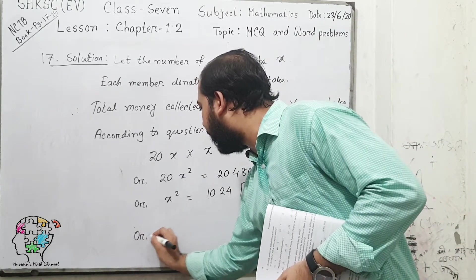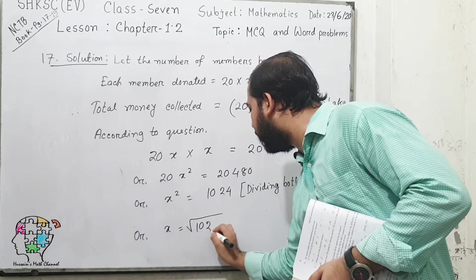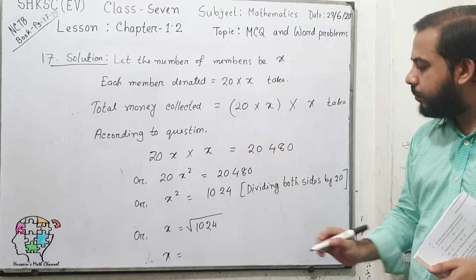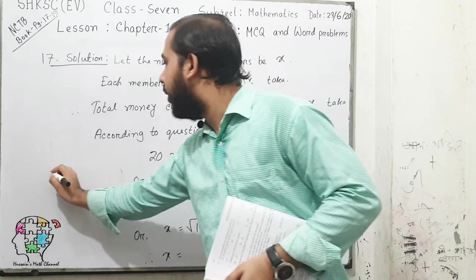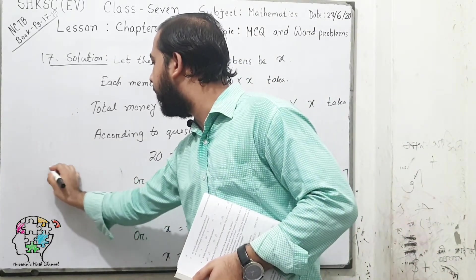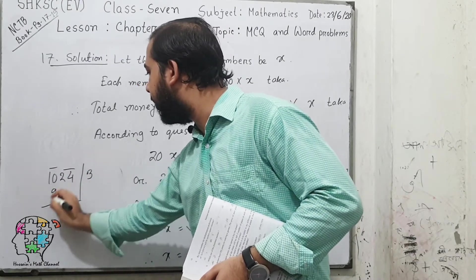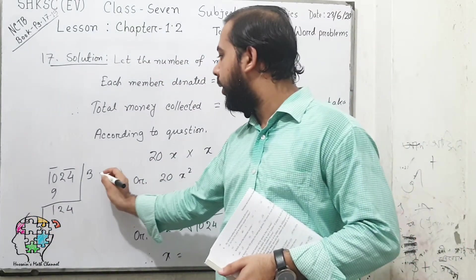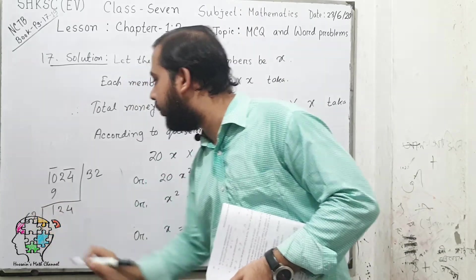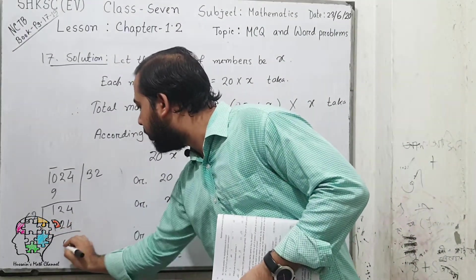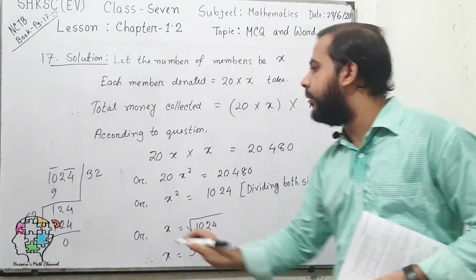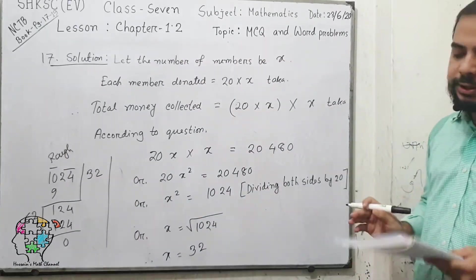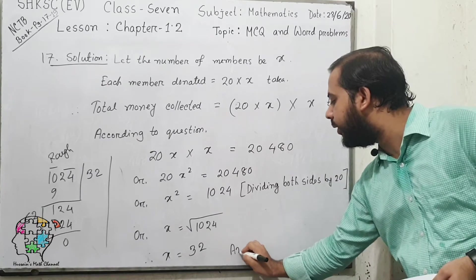Now if we find the square root of 1,024, we can find the number of members. Doing the calculation: there are two pairs, the closest number is 3, double of 3 gives 6, then adding 2 gives 62, and 2 times 62 is 124. So the square root answer is 32. The number of members in that cooperative society is 32.